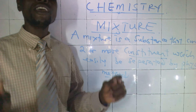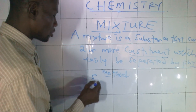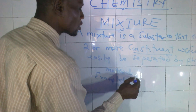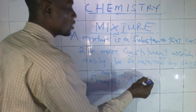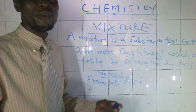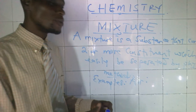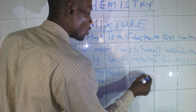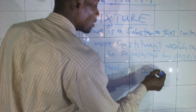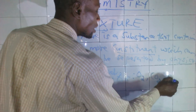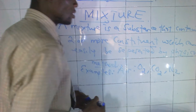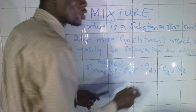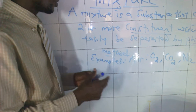So what is an example of a mixture? The most common one is air. Air is an example of a mixture because air is a mixture of gases. It contains many gases such as oxygen, carbon dioxide, and nitrogen. So oxygen, carbon dioxide, and nitrogen are all inside air.